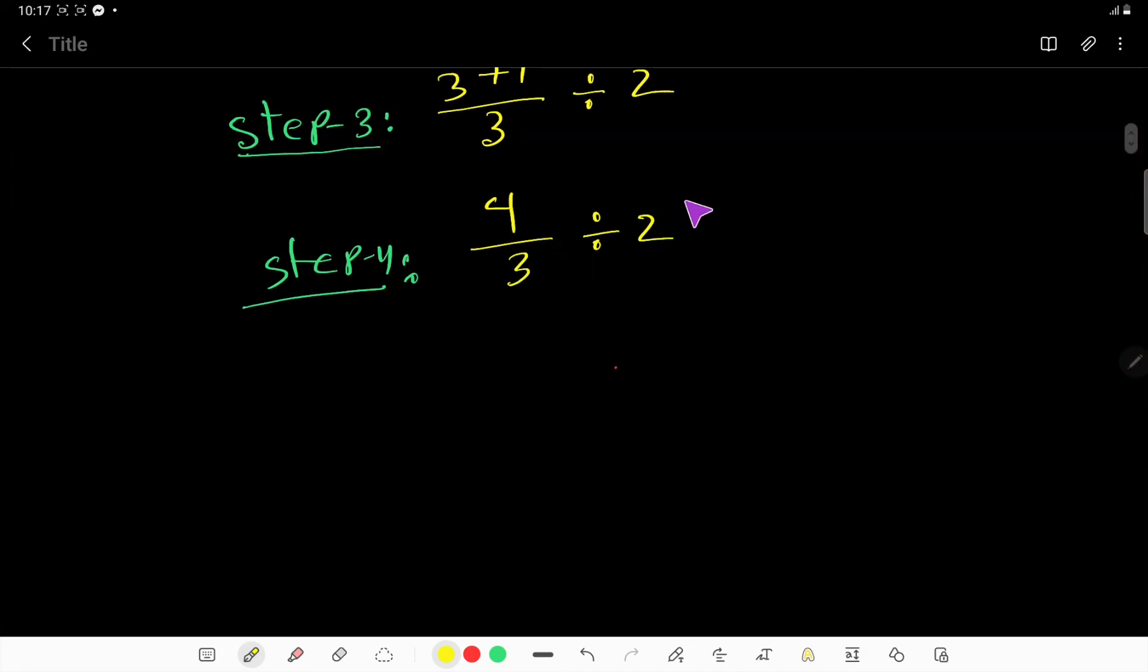So we need to convert this whole number to a fraction. We can rewrite this whole number as a fraction: two is a whole number, so to convert it to a fraction, we consider one as the denominator. So two over one. Now we have to change this division sign to a multiplication sign, and we